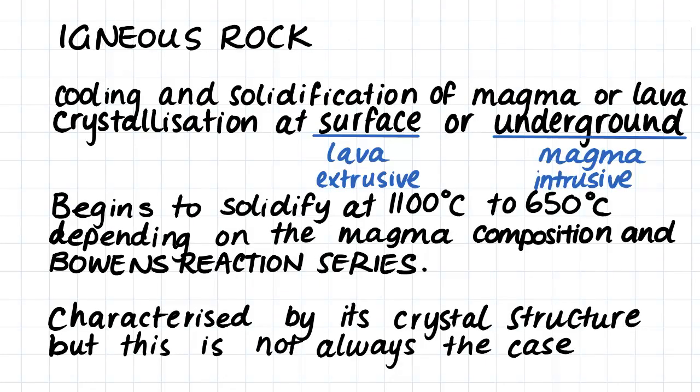Firstly we will have a look at igneous rocks. The majority of the earth is actually made up of igneous rocks and it forms from the solidification of molten rock, that is either magma or lava. This crystallization of the molten rock can occur either at the surface or underground. The molten rock will solidify at temperatures from 1100 degrees to 650 degrees, depending on the composition of the rock and according to Bowen's reaction series.